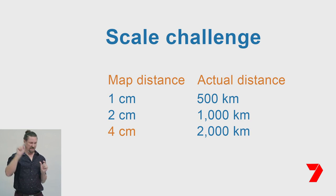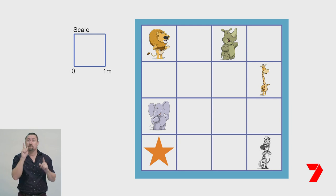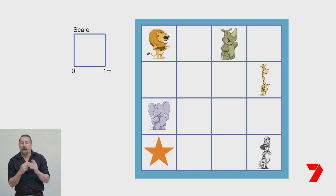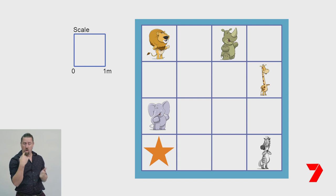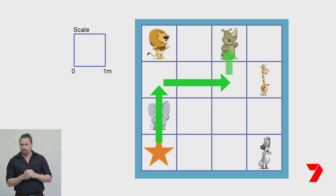Let's recap navigation and scale with an activity. Navigation is the term we use when we plan a pathway from one point to another. Here is our game board with a scale added — each square on the grid represents a one metre square. Start at the star. From the star, move two metres north, then two metres east, then one metre north. Where did you end up? If it was the rhinoceros, you navigated correctly.